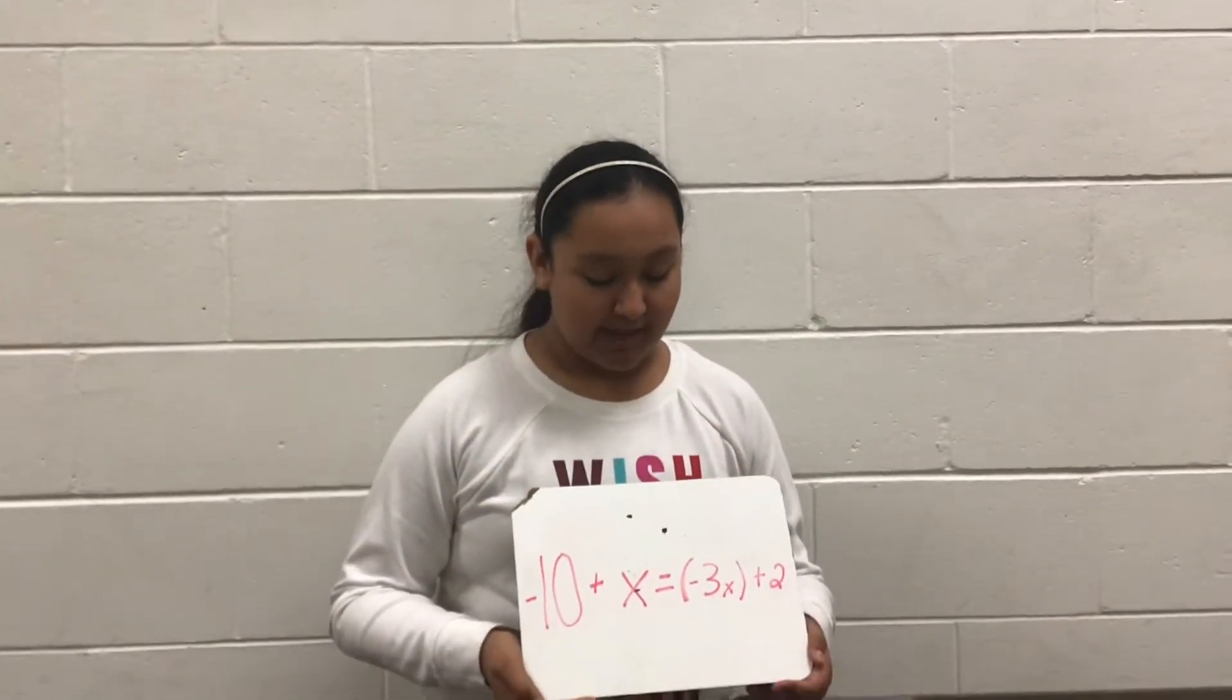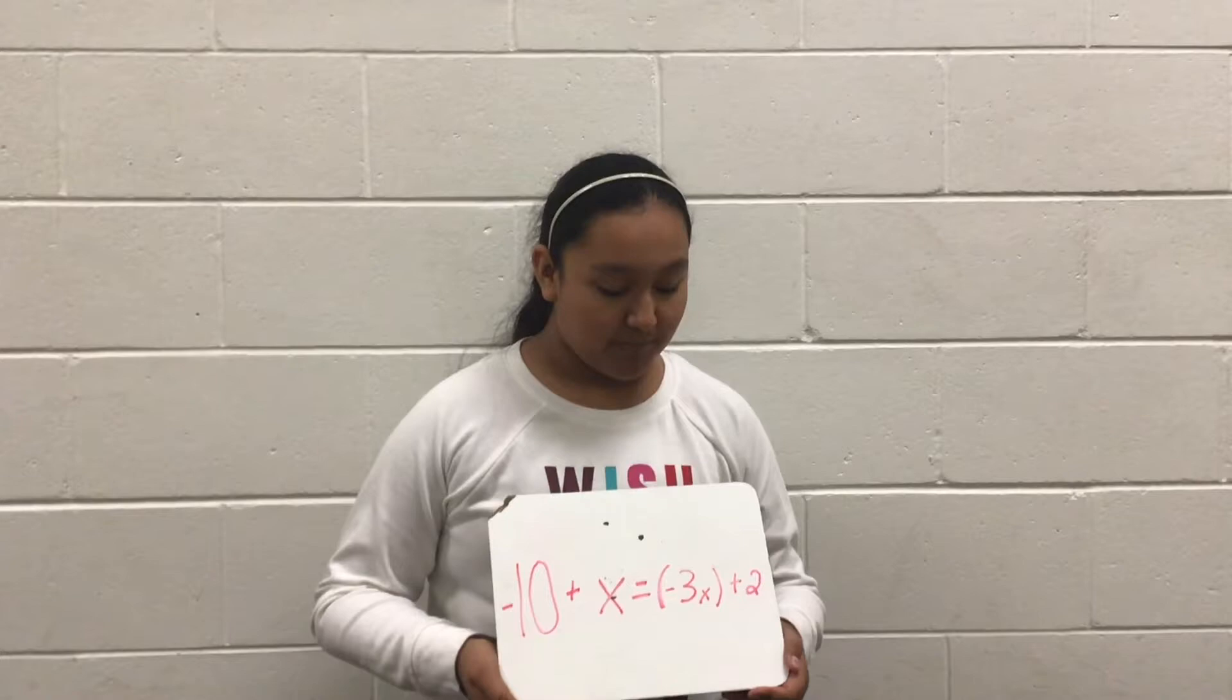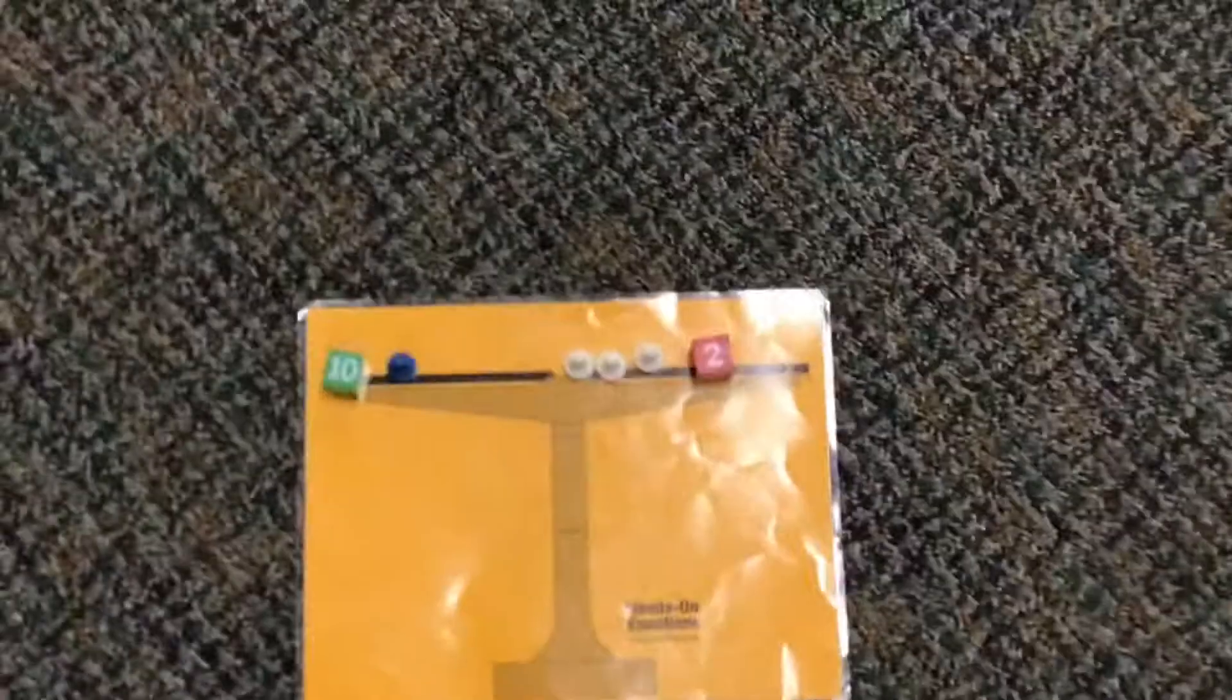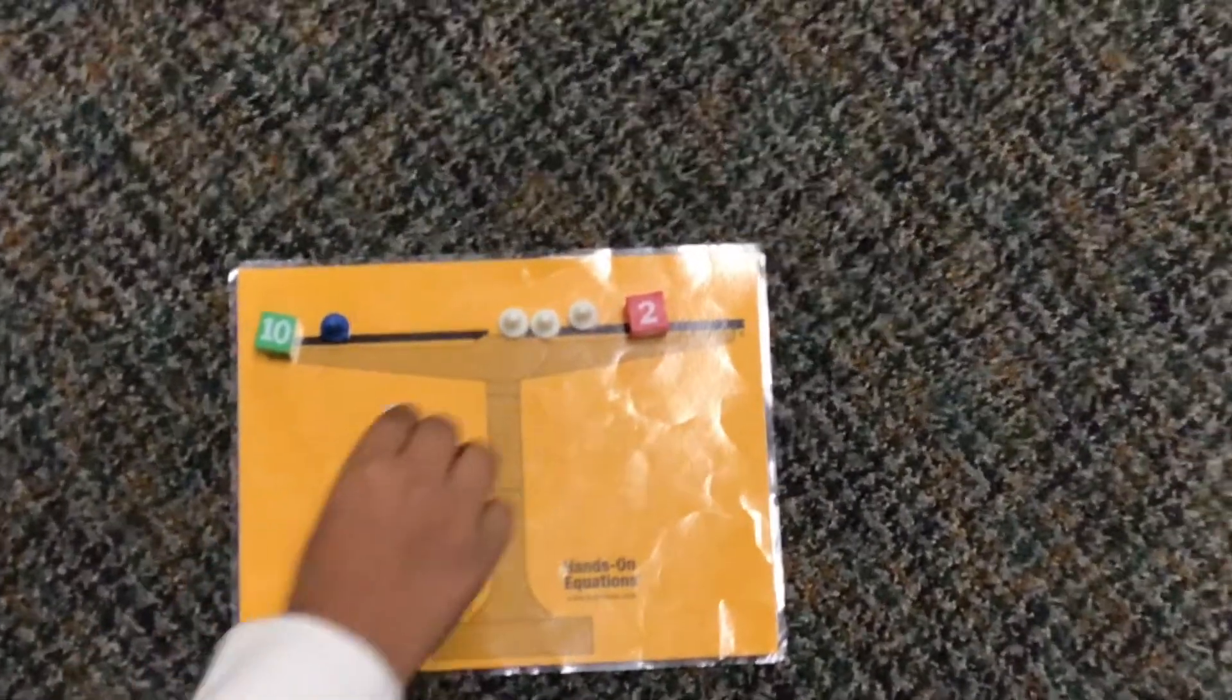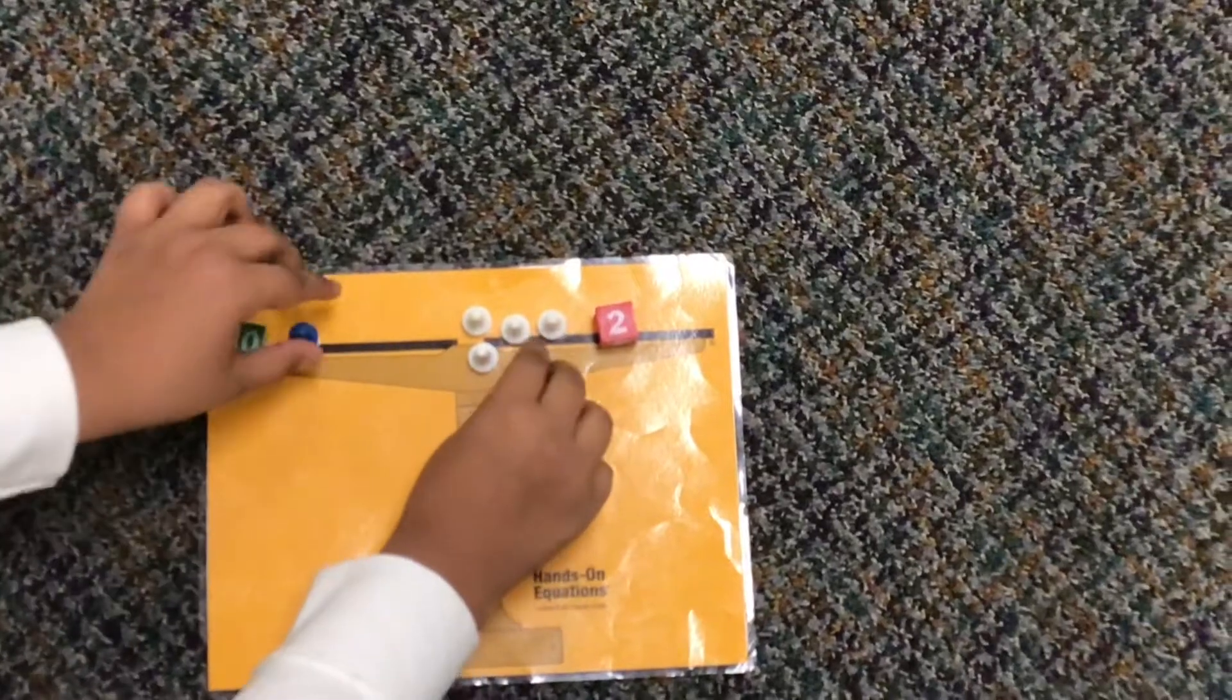The next problem is negative 10 plus x equals negative 3x plus 2. The first thing I'm going to do is add a pair of zero to this side so I can take away these two.